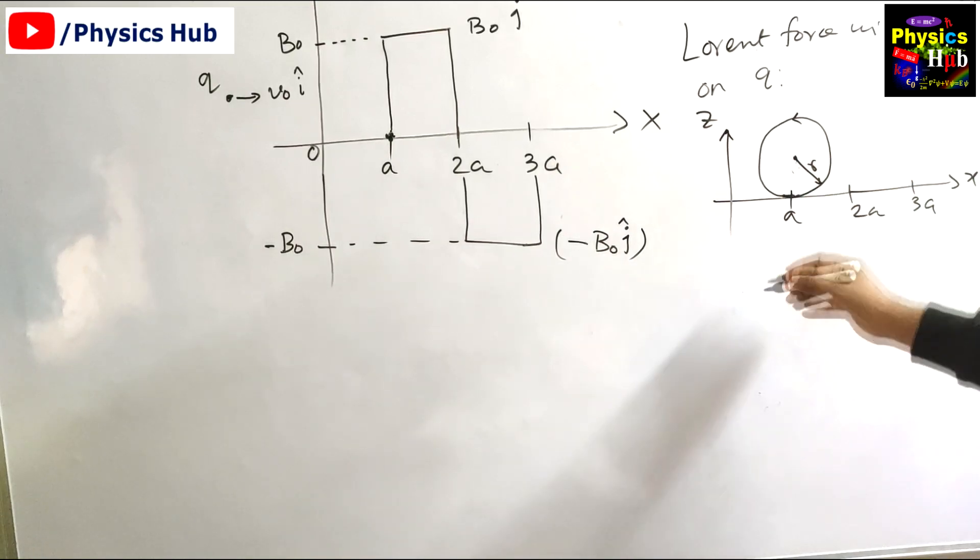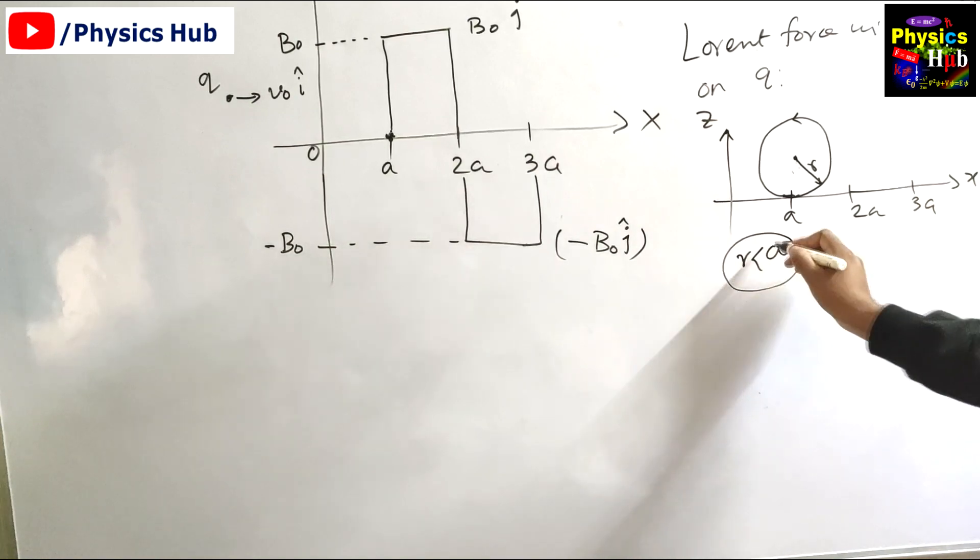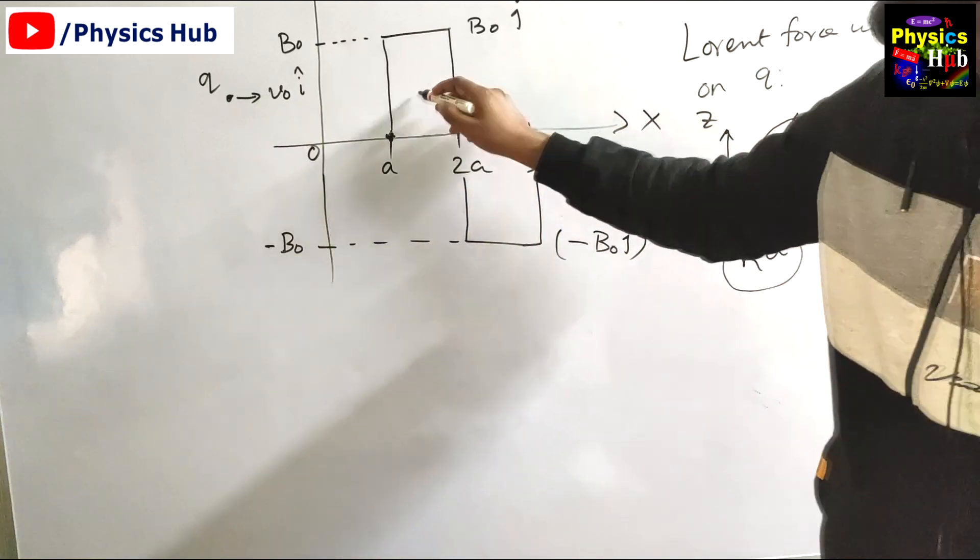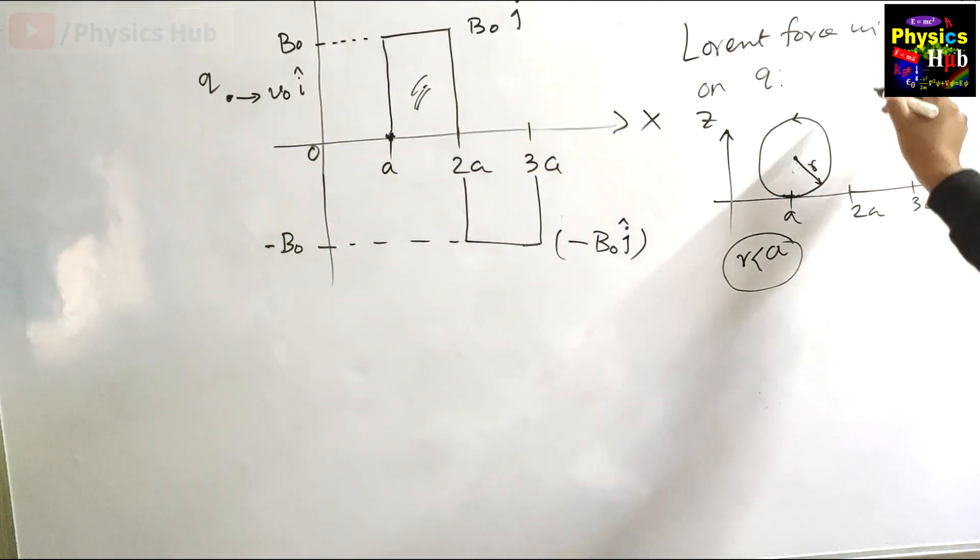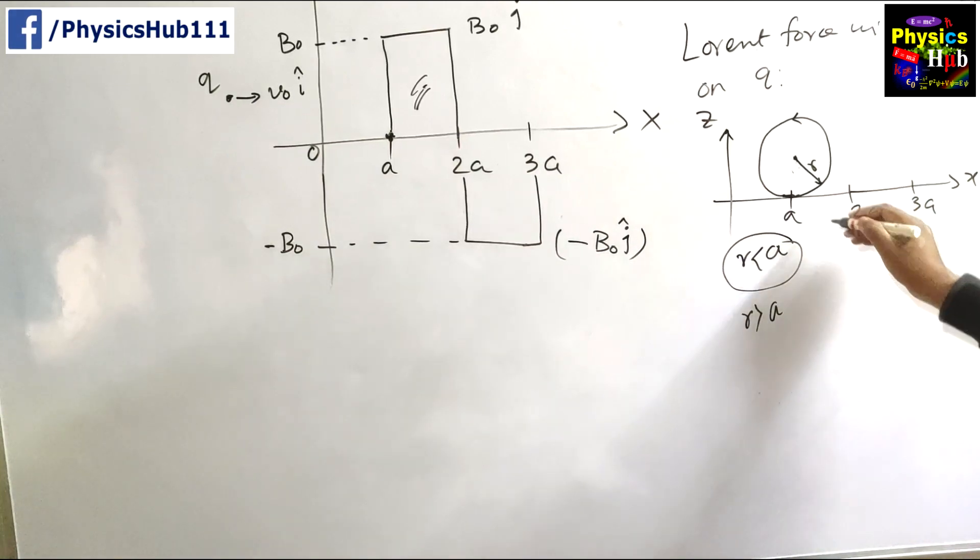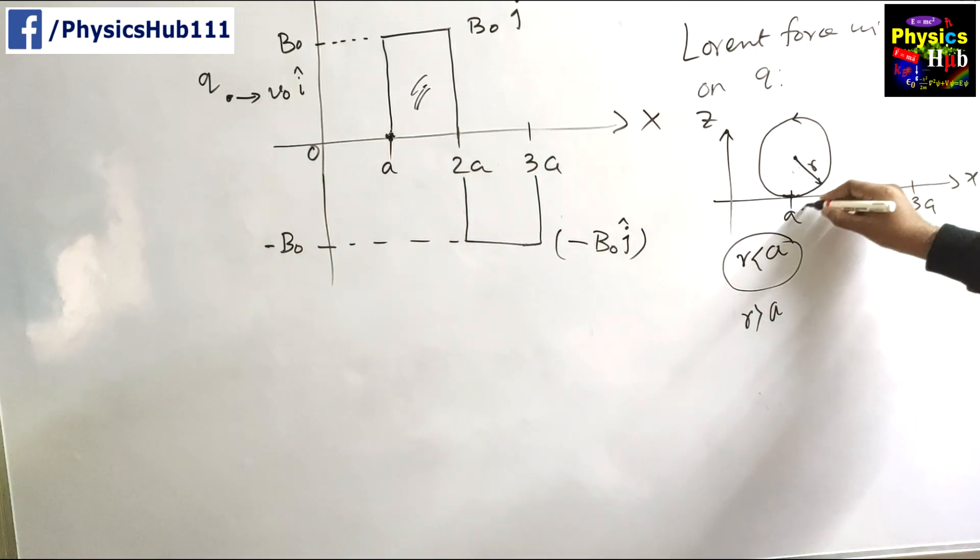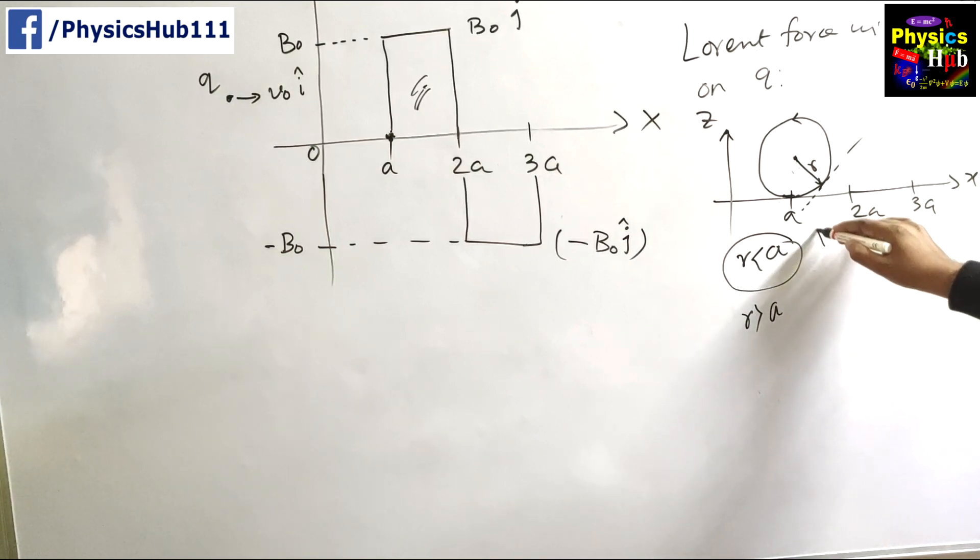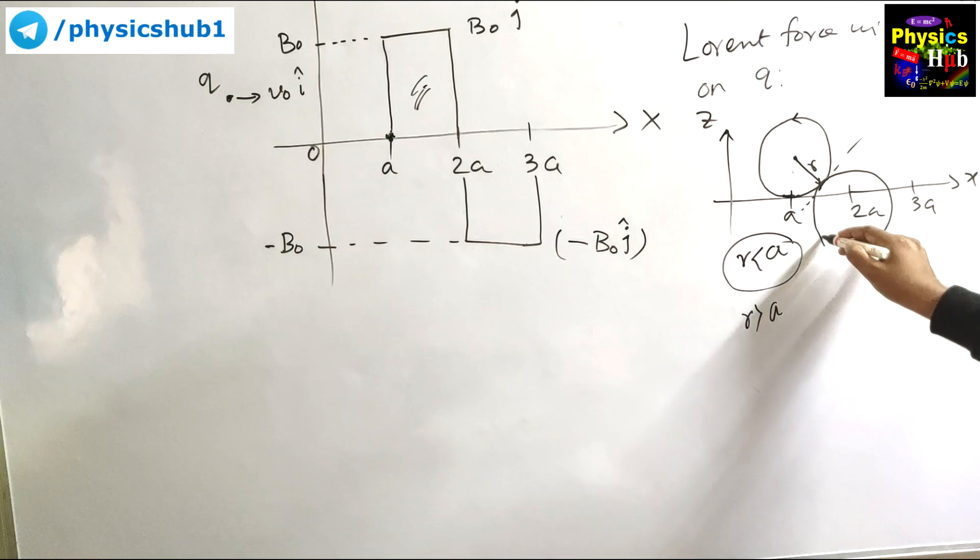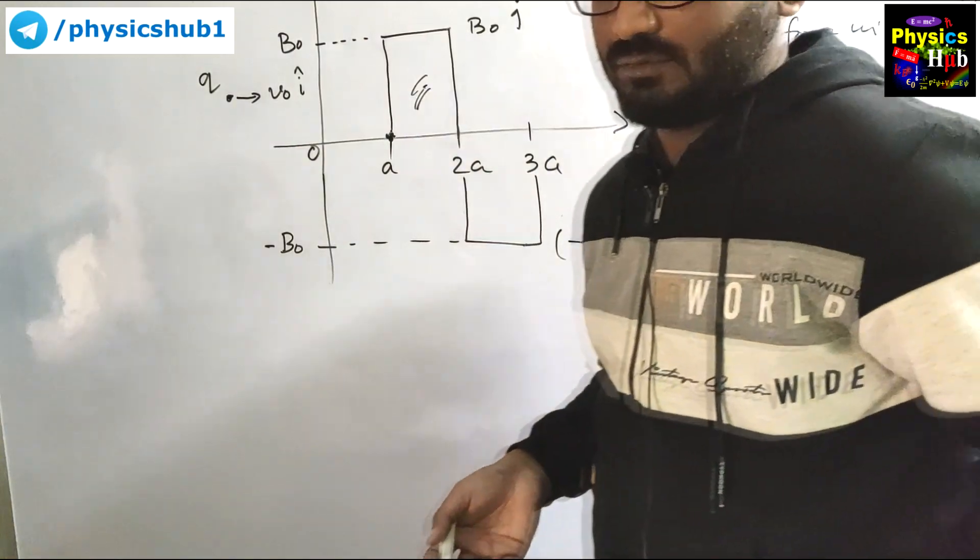If this radius r is less than a then the particle will remain in the above region only, but if this radius r is greater than a then this particle will come out into the next region here. You can just draw a tangent here so in the lower part region it will come like this, but here in the lower part region the direction of magnetic field is in the opposite direction so the direction of the particle circular trajectory will be opposite.